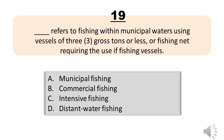Number 19. Blank refers to fishing within municipal waters using vessels of 3 gross tons or less, or fishing not requiring the use of fishing vessels. A. Municipal fishing. B. Commercial fishing. C. Intensive fishing. D. Distant water fishing. The correct answer is Letter A. Municipal fishing.